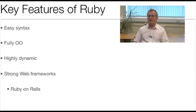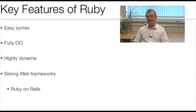Ruby is fully object-oriented — everything in Ruby is an object. There are no primitive types and no need to wrap primitive types up as objects. Everything — an integer, a string, for example — is an object right from the start.